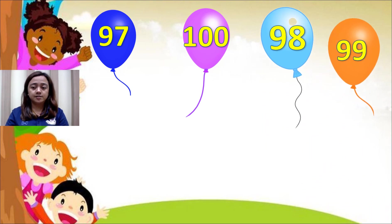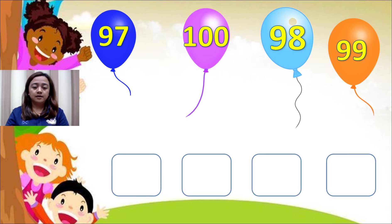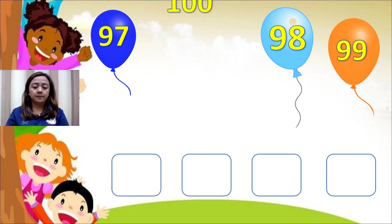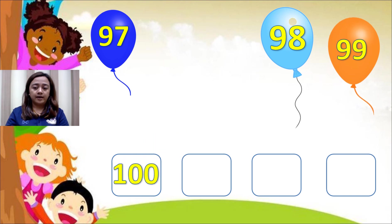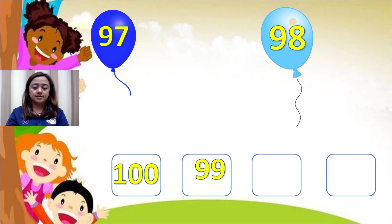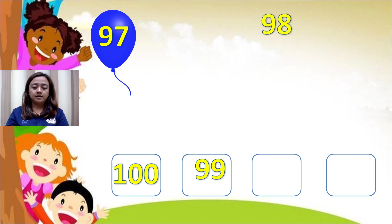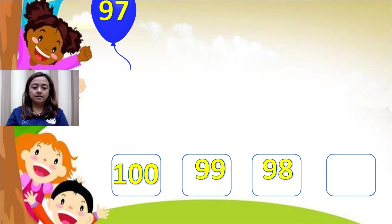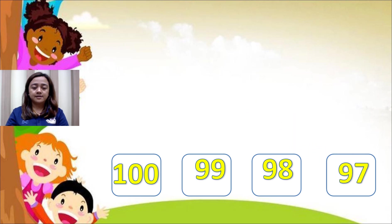Now let's look at descending order — arranging from largest to smallest. First we have number 100, next is 99, 98, 97. So the order is 100, 99, 98, 97.